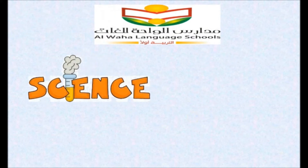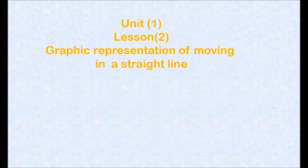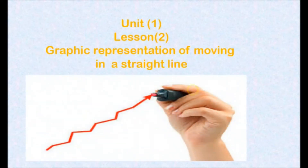My dear students, how are you? I hope you are fine. Today we will talk about lesson 2 in unit 1. Lesson 2 is called 'Graphic Representation of Moving in a Straight Line,' or how to make a graph to describe the motion of an object in a straight line. In the previous lesson we talked about motion and the factors affecting motion and we talked about speed. Today in our lesson we will see how to make a graph to describe the motion of an object.